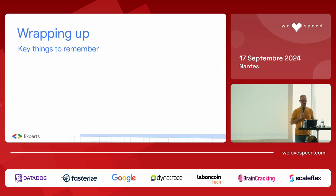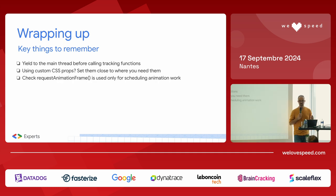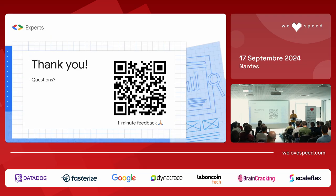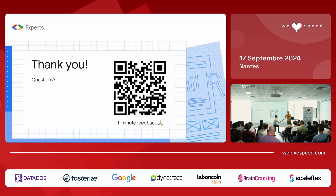To conclude — things to remember: yield to the main thread before calling tracking functions; if using CSS custom properties, set them close to where you need them; check if you're using requestAnimationFrame for non-animation work and use it only for animation-related scheduling; and delay all JavaScript code that is not currently needed. Thank you! I'll take your questions now.